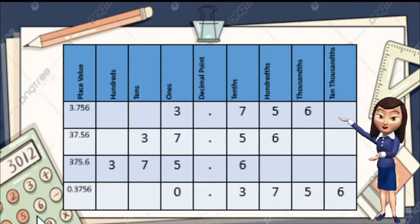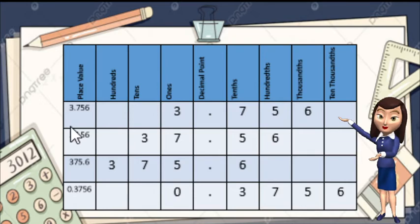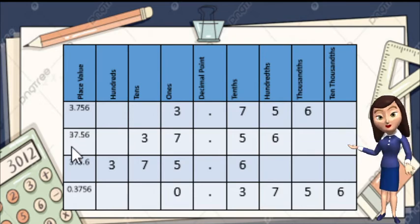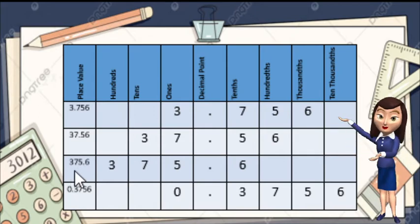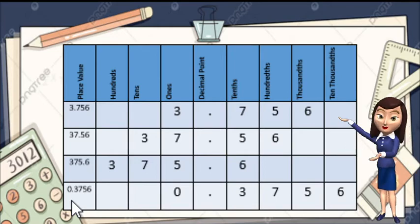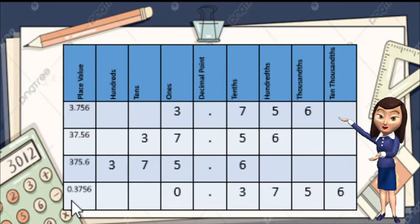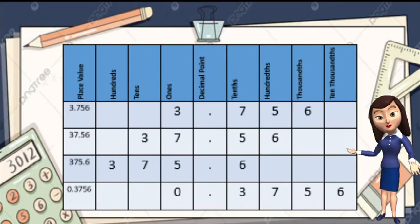So we have here a place value chart. Our first number is 3 and 756 thousandths. Next, 37 and 5600. Then 375 and 6 tenths. And last is 3,756. So if we are going to arrange these numbers in ascending order — pag sinabi nating ascending order, yung pinakabalit na number muna, palake ng palake.